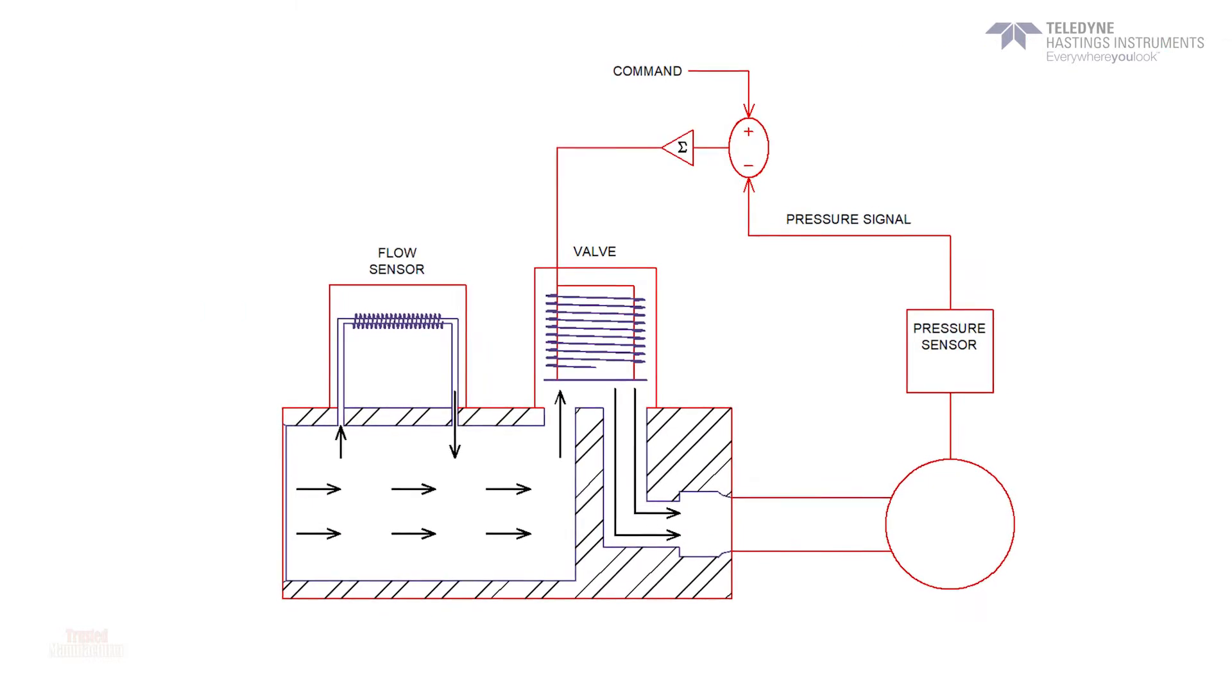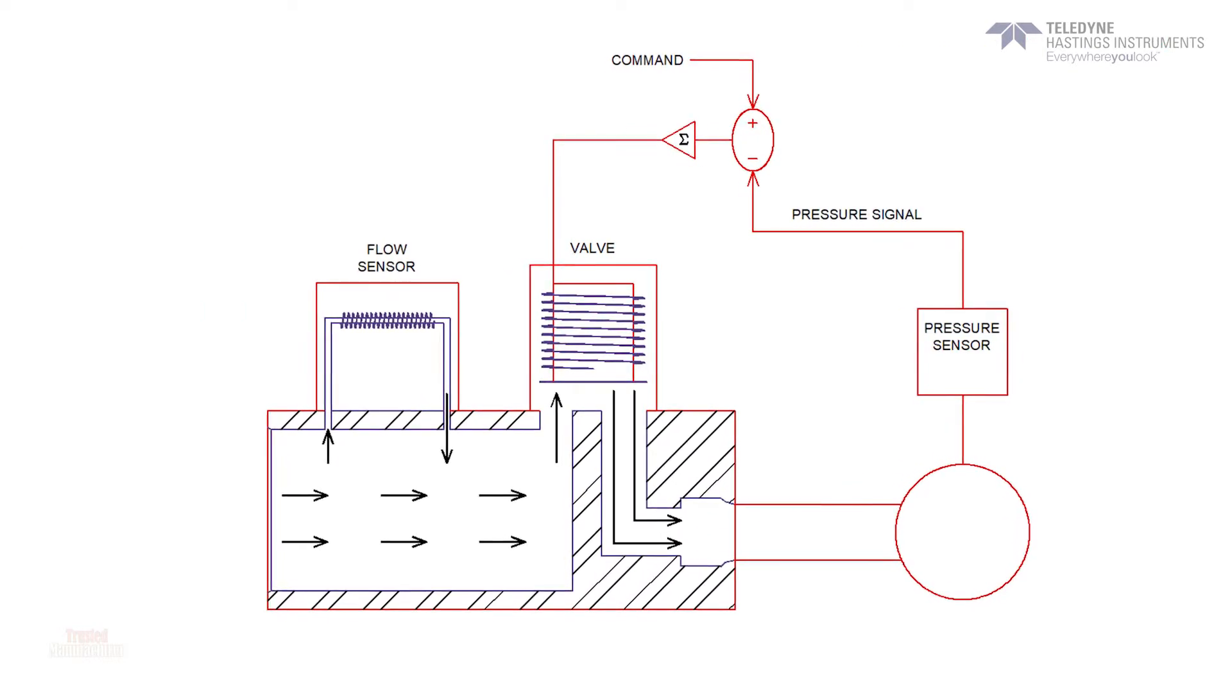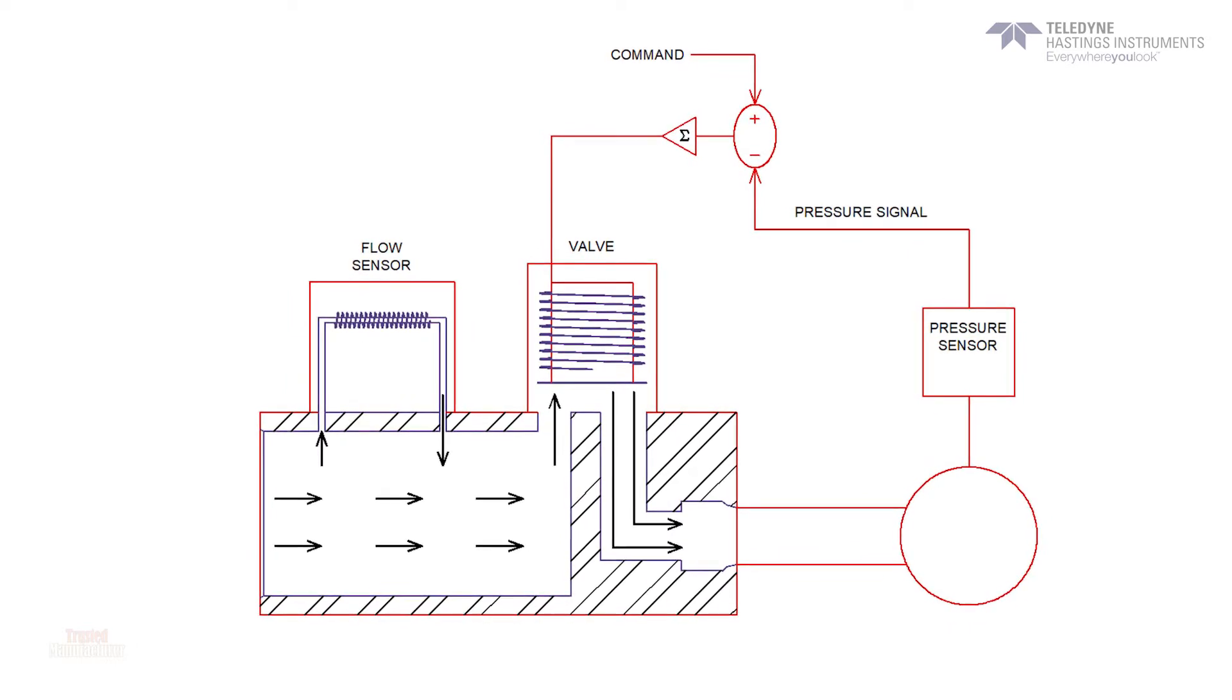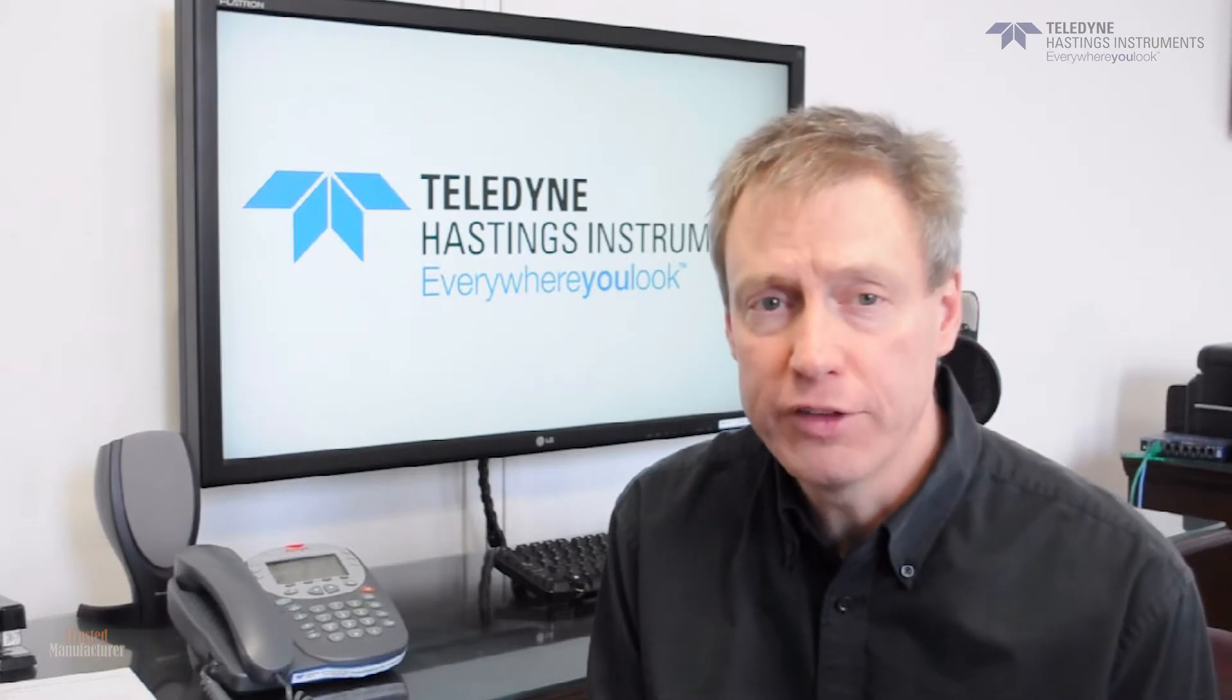But now here's the cool thing: we can use a pressure signal as the feedback instead of the flow signal to control the valve. In this mode, the instrument becomes a pressure controller. Now let's take a look at how that's going to work.